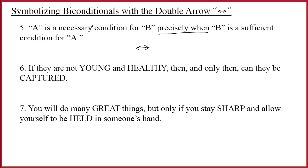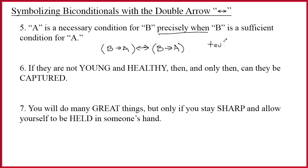The main connective is the double arrow from 'precisely when.' How do we say 'A is a necessary condition for B'? The rule for necessary conditions is that what is necessary is the consequent, so the symbolization is b arrow a. On the back side, 'B is a sufficient condition for A' — the rule for sufficient conditions says what is sufficient is the antecedent, giving us b arrow a again. So we have: (b arrow a) double arrow (b arrow a). This sentence is a tautology — a sentence which is always true — since b arrow a always corresponds to itself.